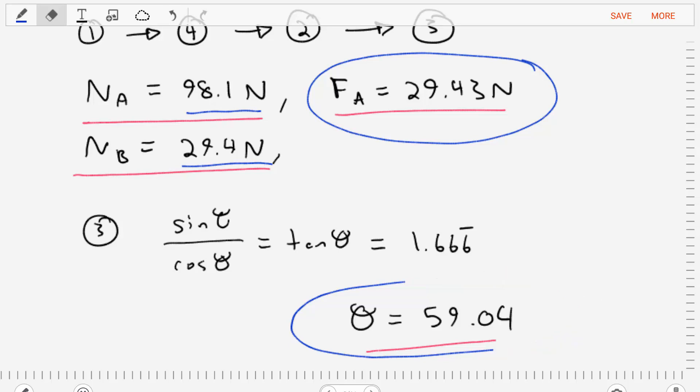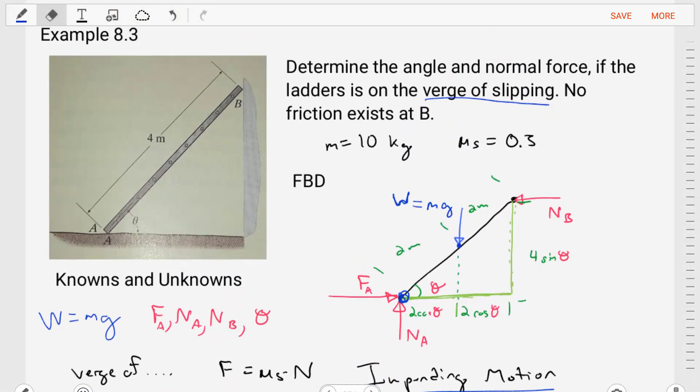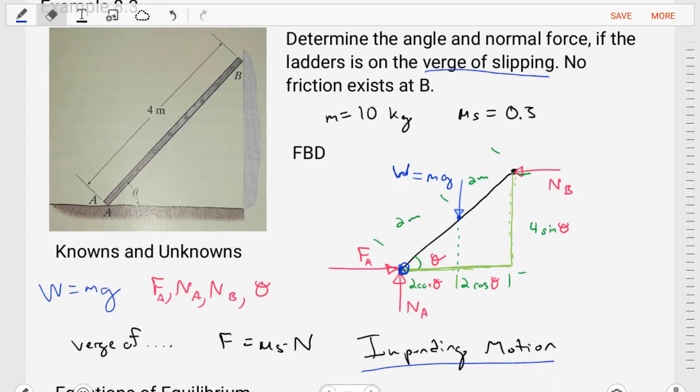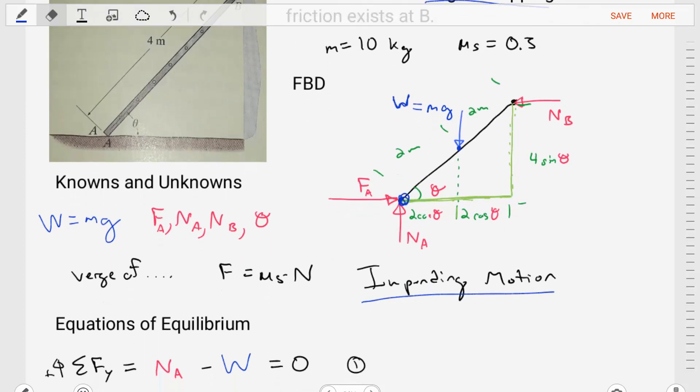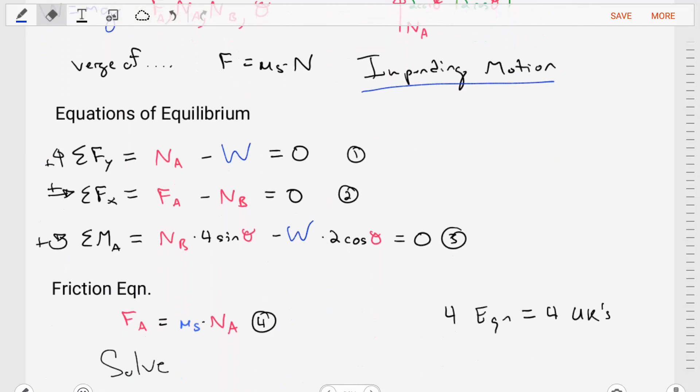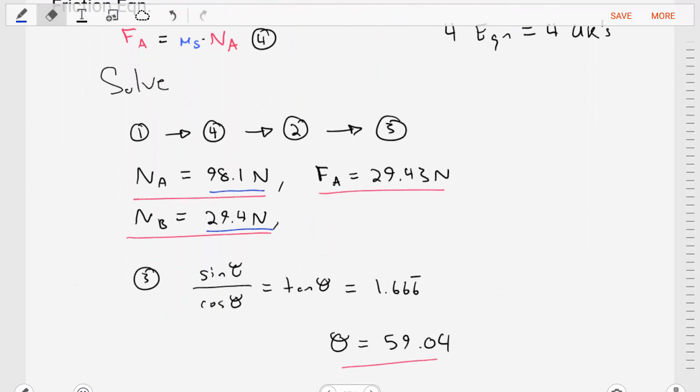All right. So this problem we work through and we solve for what we wanted. We started with analyzing our diagram, creating a free body diagram, putting all the information that we could in it, listing out our knowns and unknowns and thinking through how we might solve this problem, applying our equations of equilibrium, applying that friction equation, and then doing a bit of algebra. Thanks for watching my video. Make sure to subscribe and hit the bell button. I'll see you in the next example.